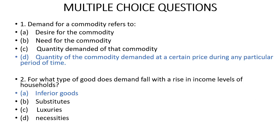First question: demand for a commodity refers to? Basically, demand for a commodity refers to that amount of a commodity that consumers are willing to buy and able to purchase at a particular price during a particular period of time. A consumer has a willingness and ability to buy goods at that time — so we call it demand for a commodity. The answer will be D: quantity of a commodity demanded at certain prices during a certain period of time.